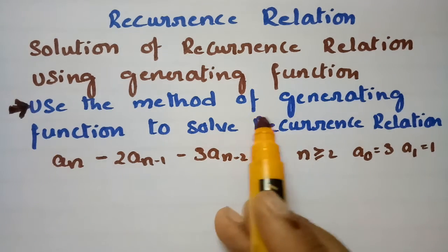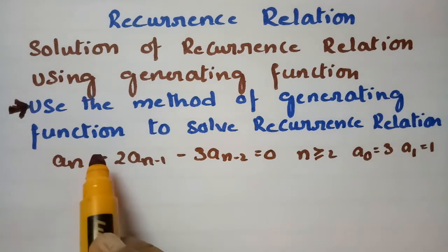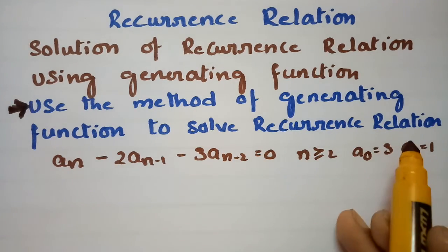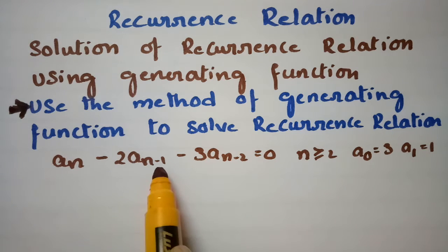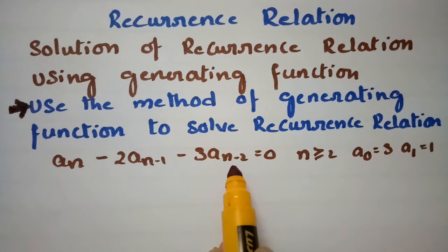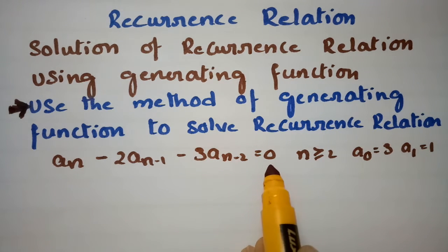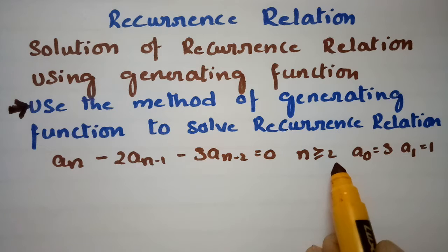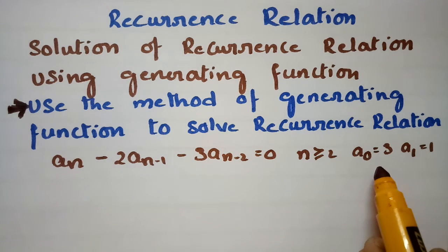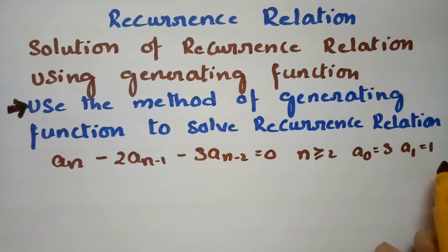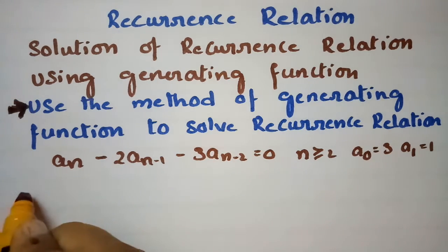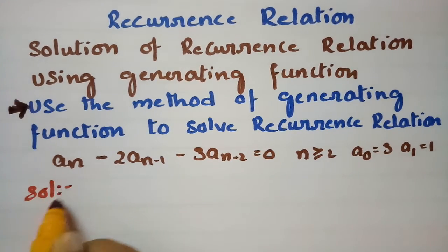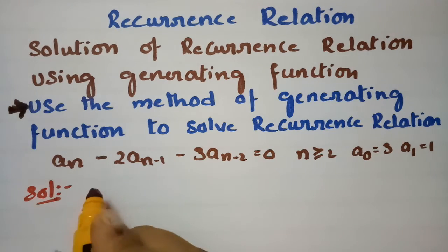We are going to use the method of the generating function to solve the recurrence relation: aₙ minus 2 times aₙ₋₁ minus 3 times aₙ₋₂ equals 0, where n is greater than or equal to 2, with initial conditions a₀ equal to 3 and a₁ equal to 1.